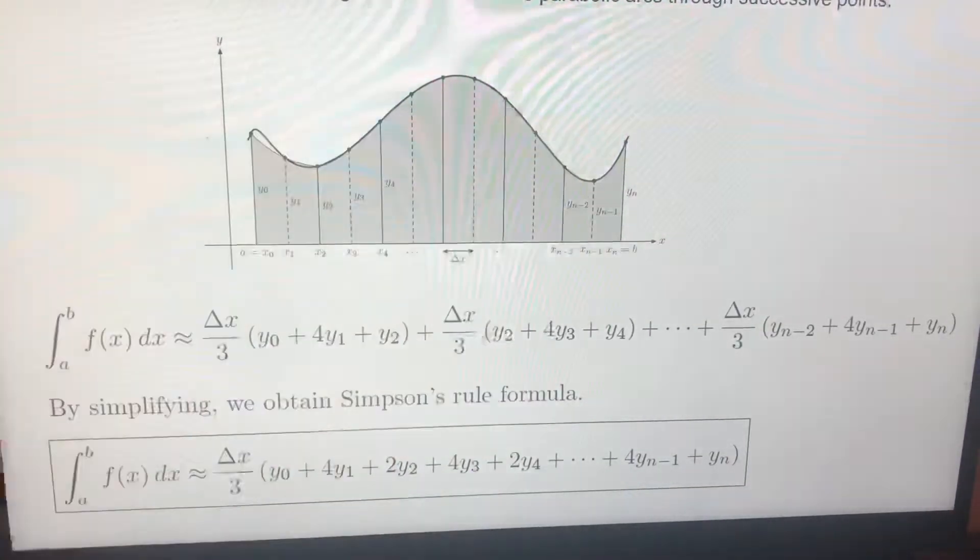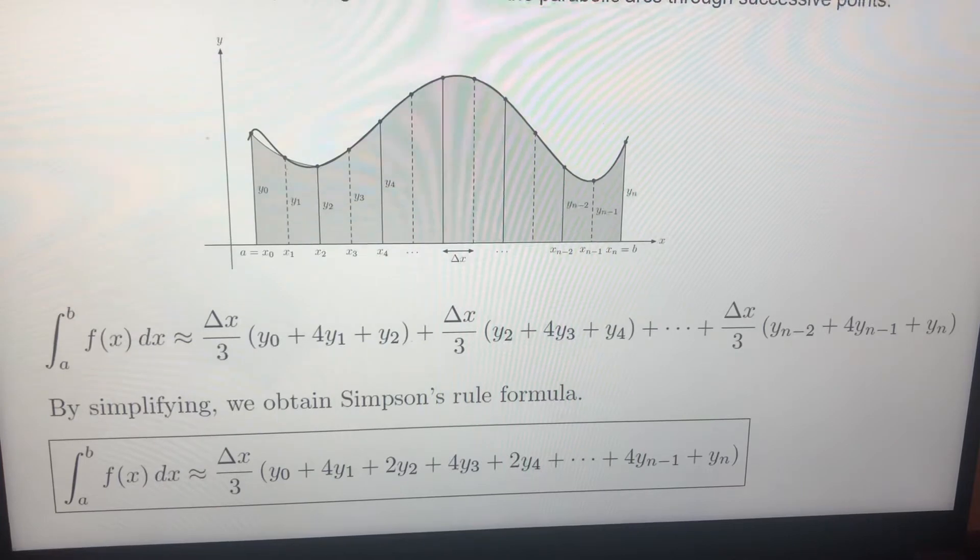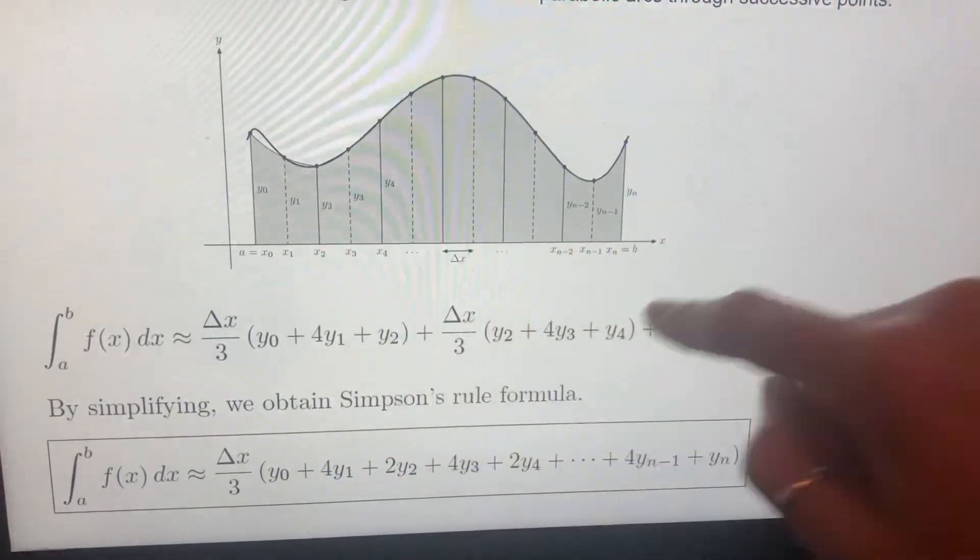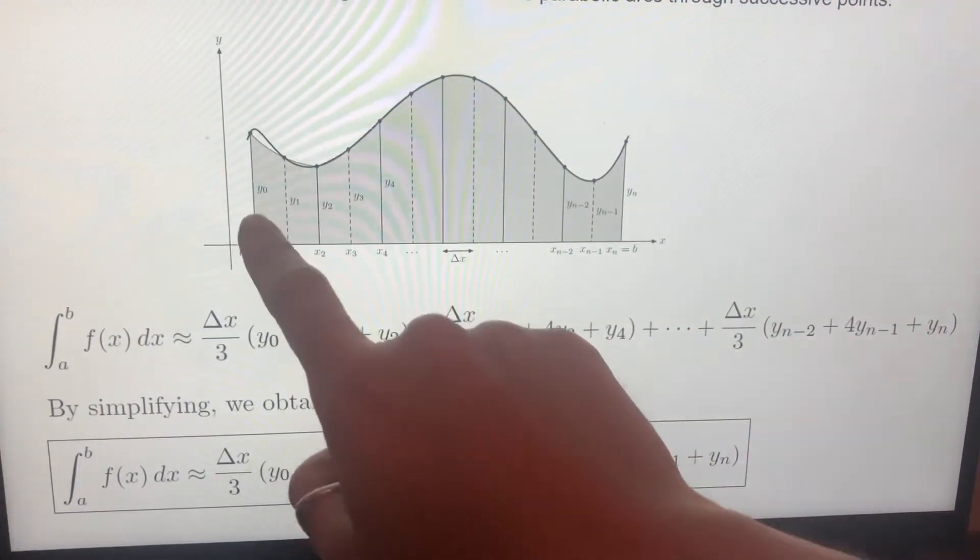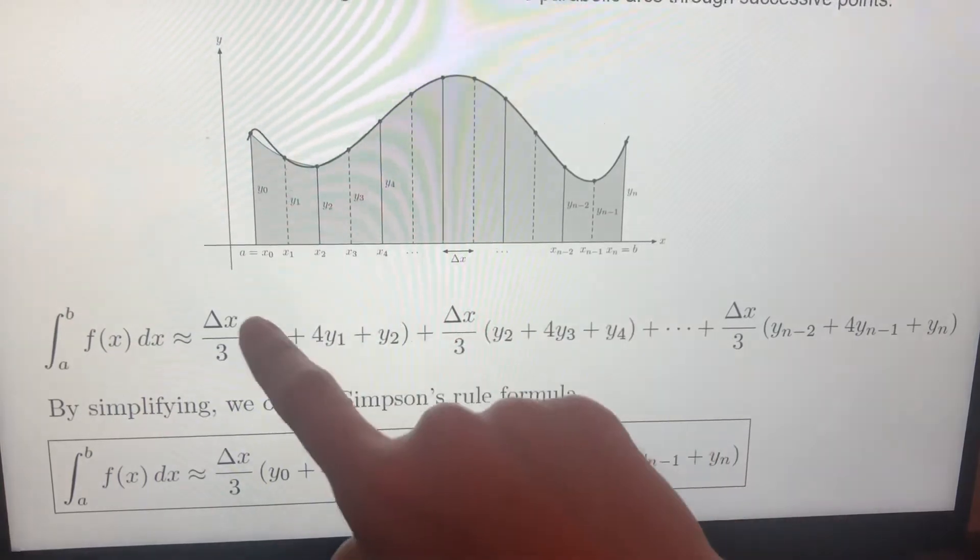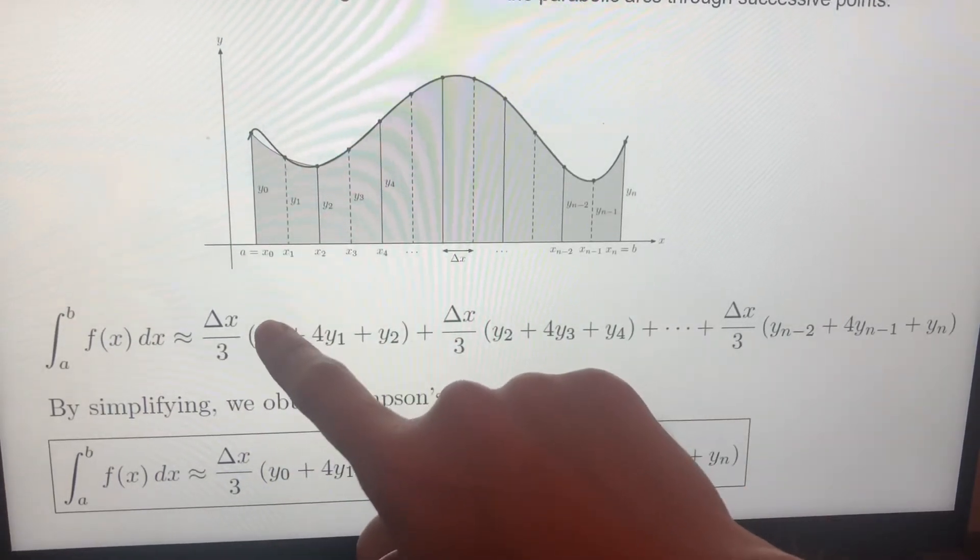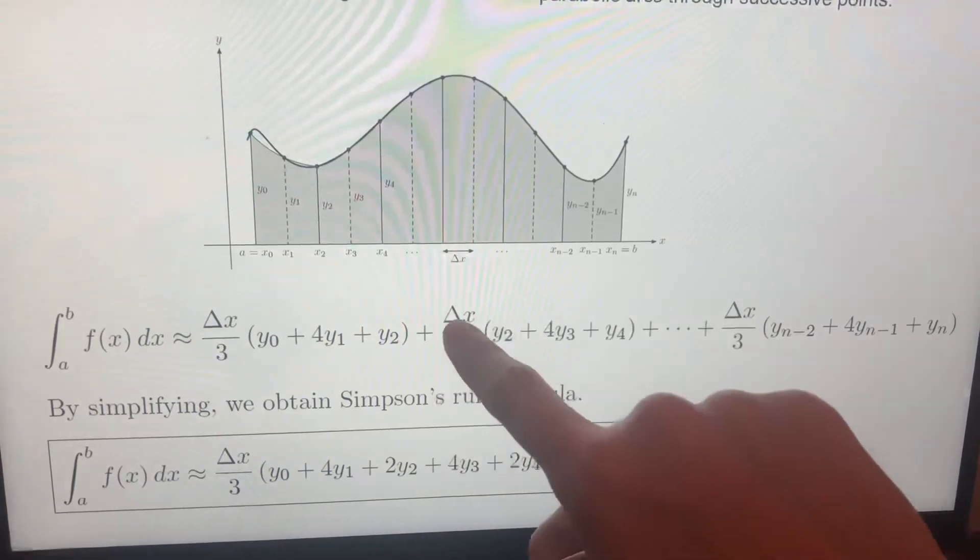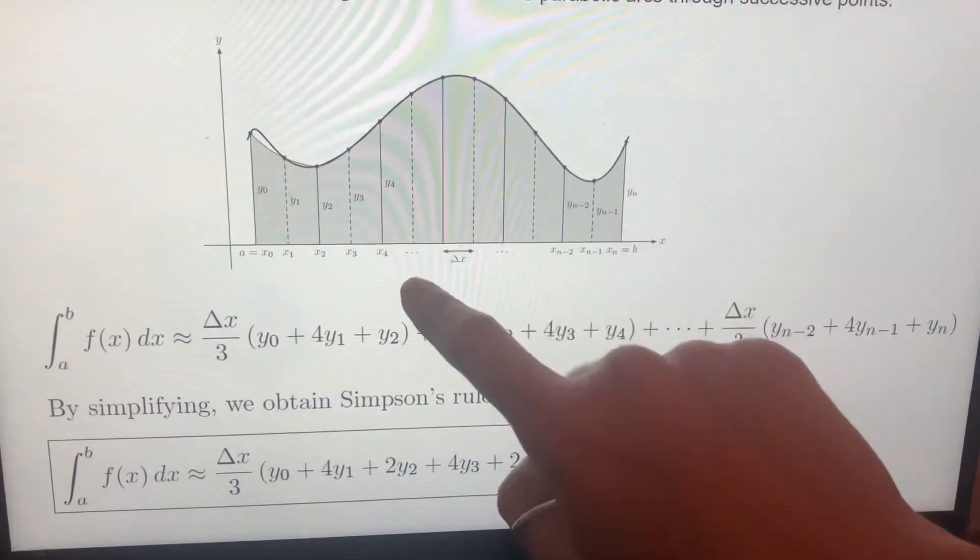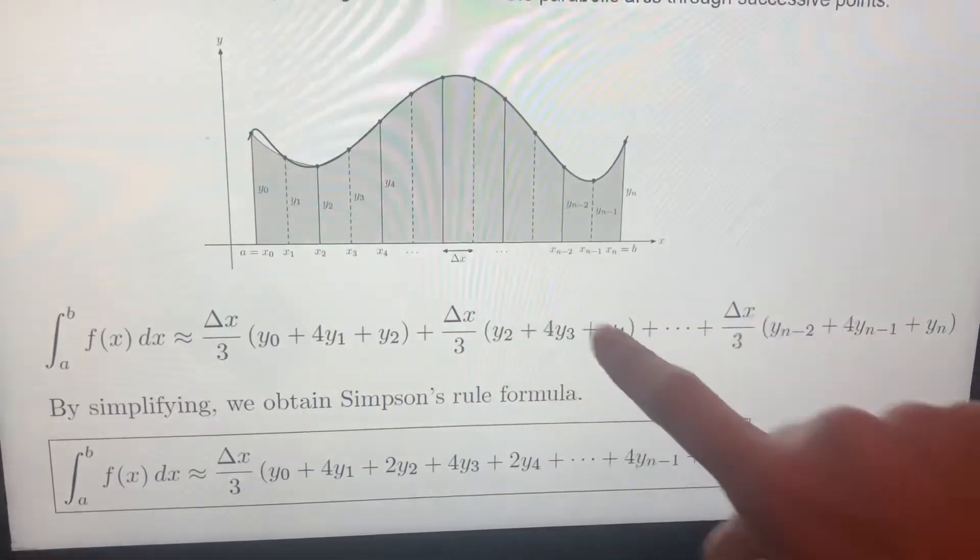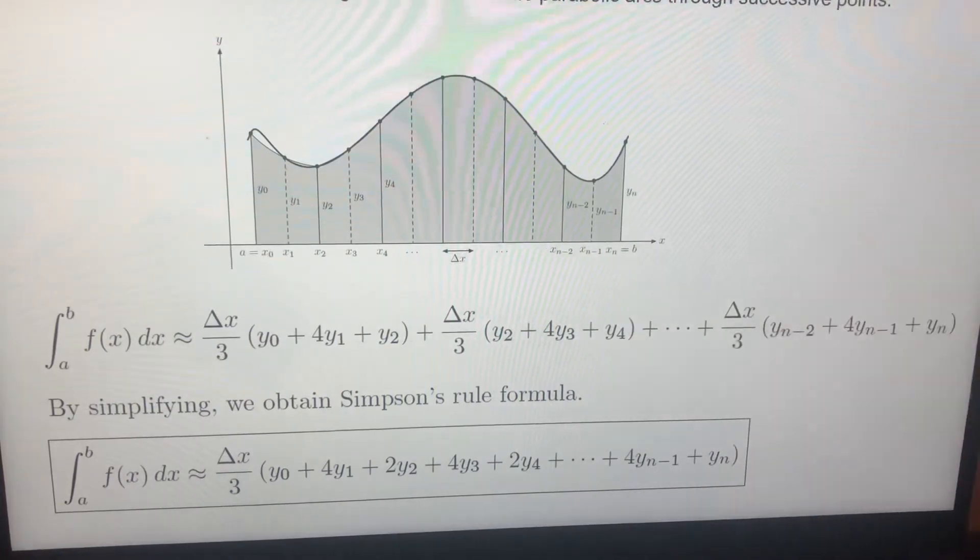Now, if you have more than three, which you will have in general, you need to sum them up. So y zero, y one, y two, we have that one. And after that, y two, y three, y four, we have that one. And y four, y five, y six, you have that one. And it will go like that.